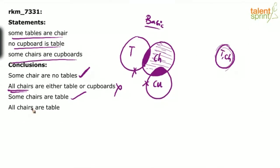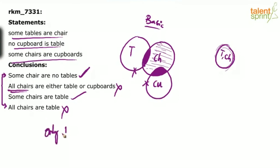All chairs are tables is wrong. And obviously, conclusions 1 and 4 are like converses of each other — some chairs are not tables is correct, so obviously all chairs are tables would be wrong. If some A's are not B's is correct, then definitely all A's are B's should be wrong. So your answer to this question should be only one and three follow. All those who had marked only three follows, please check your answers again. I hope all of you followed the explanation.